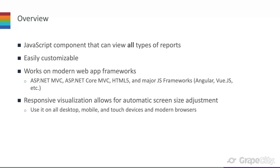A favorite feature of the JS Viewer is responsive visualization — the viewer automatically adjusts to the screen size so it can be used on all desktop, mobile, and touch devices on modern browsers. The report itself stays the same, but the viewer adjusts to the screen it's being consumed on. Features covered: page navigation, refreshing the report, downloading, printing, different display views, zooming, and the parameters UI.